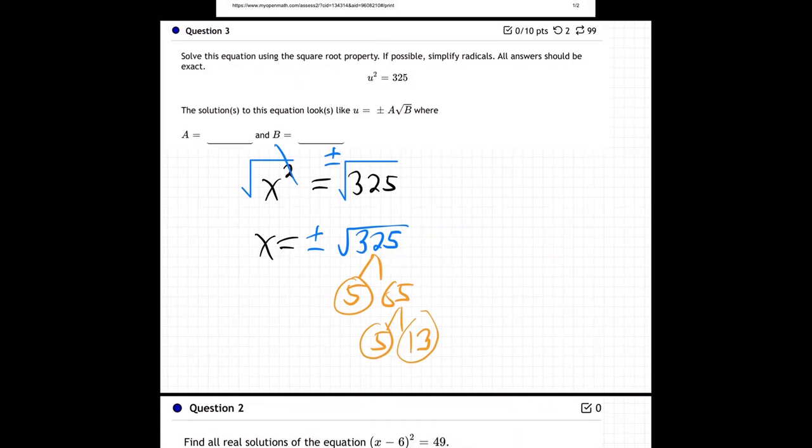And so there it is. So I've got this to be reduced. Now, plus or minus the square root of five times 5 times 13. I just found out the pieces of 325. Just broke it down with my calculator.